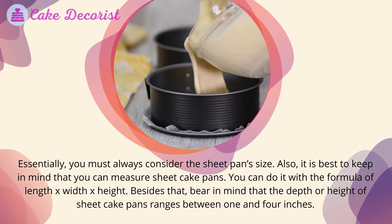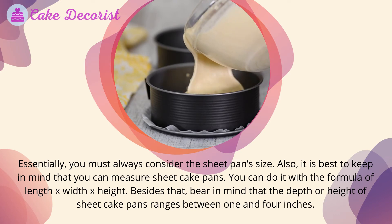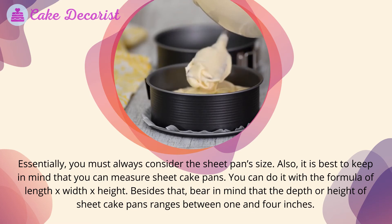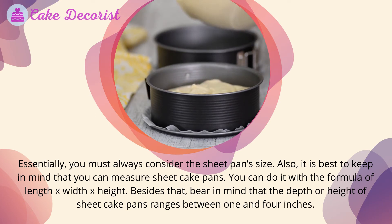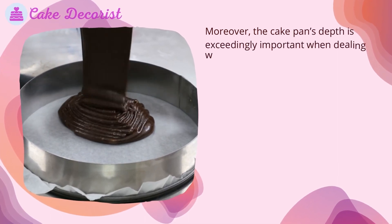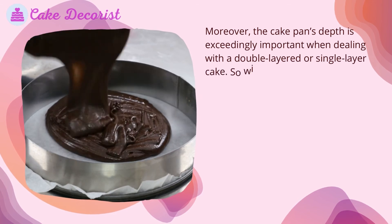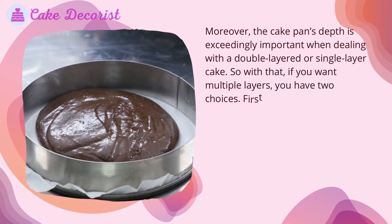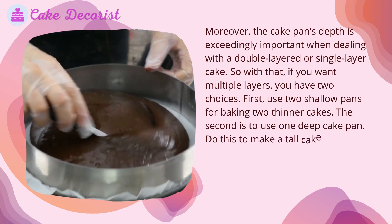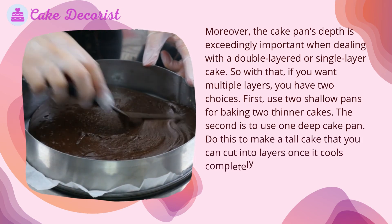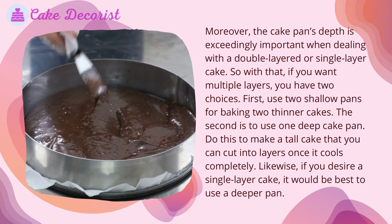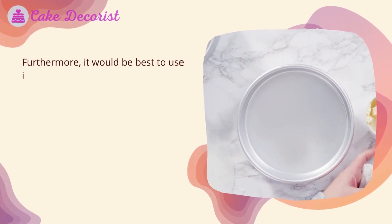When choosing the right sheet cake pan, always consider the sheet pan's size. You can measure sheet cake pans using the formula of length times width times height. The depth of sheet cake pans ranges between one and four inches, and the pan's depth is especially important for double or single layer cakes. If you want multiple layers, either use two shallow pans to bake two thinner cakes, or use one deep cake pan to make a tall cake that you cut into layers once cooled. For a single layer cake, it is best to use a deeper pan.